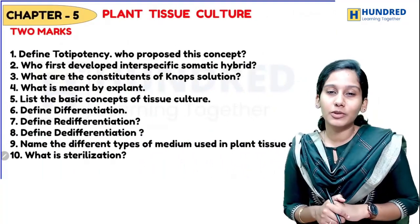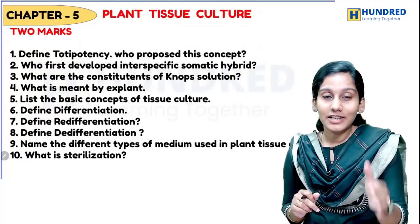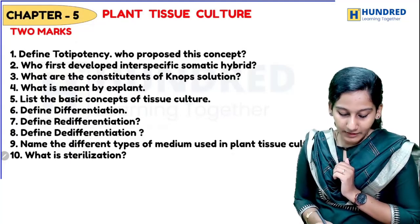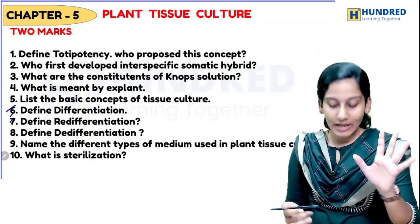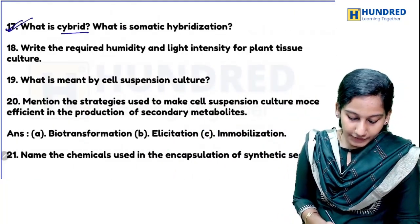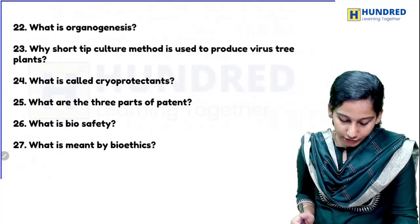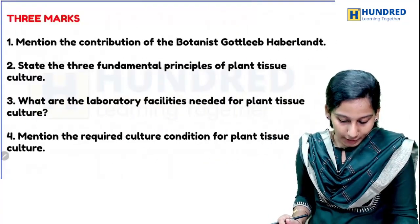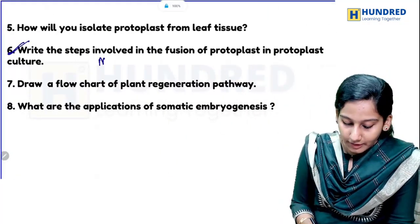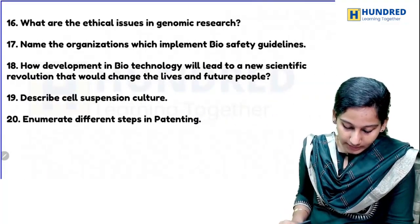The last chapter is plant tissue culture. Basic concepts of plant tissue culture are important. Along with it, protoplast culture — in the March 2023 public exam, five marks was given for this, so definitely read this question. All types and concepts are two-mark questions that together can be asked in a five-mark question.